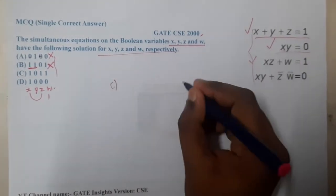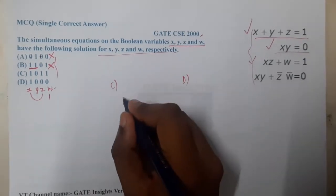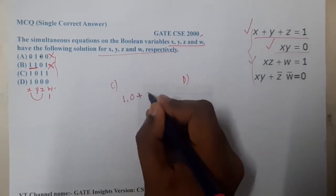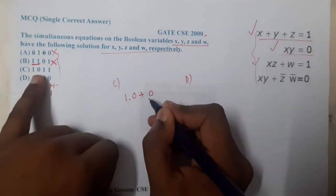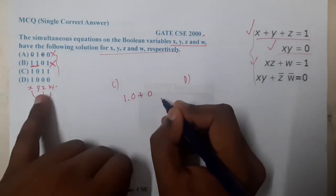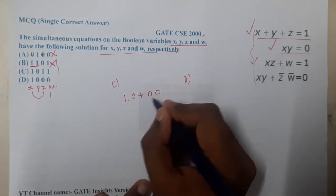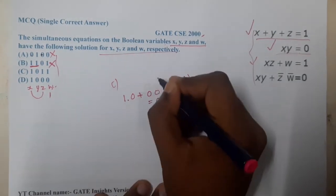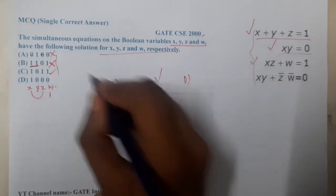It is one times zero plus zero. I am taking option C and solving: zero and zero, which is zero. Hence option C is correct with respect to that.